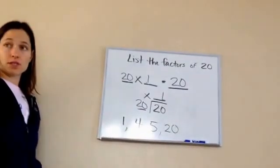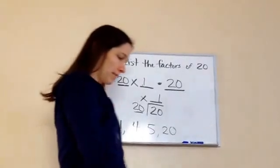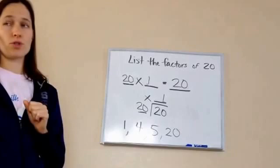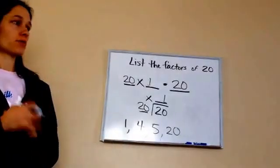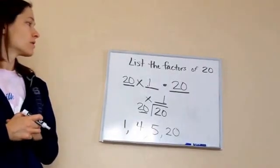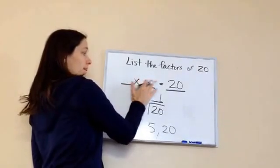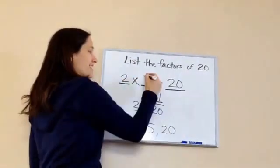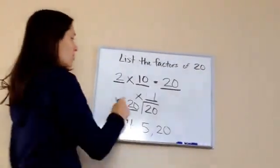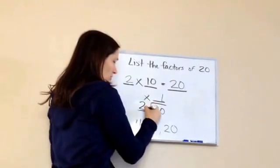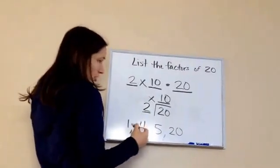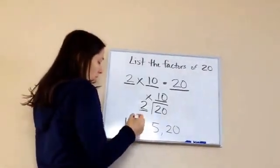Can you think of anything else that equals 20? What times what? There's one more, two more numbers, one more factor. Two times ten. Ten, very good. Two times ten equals 20. So what that looks like is two times ten, right here like that.